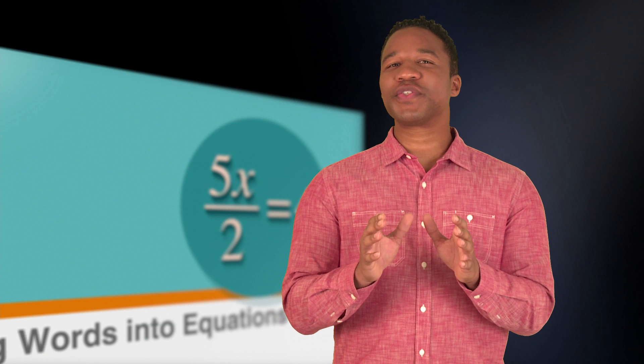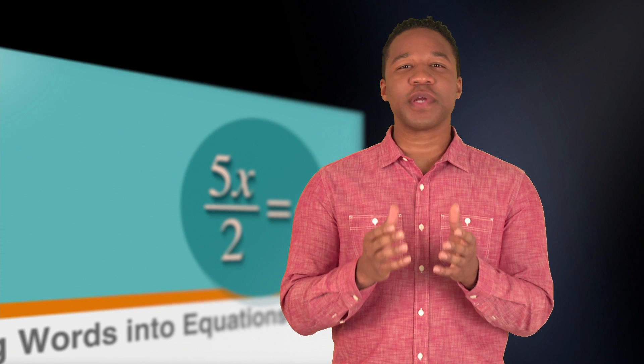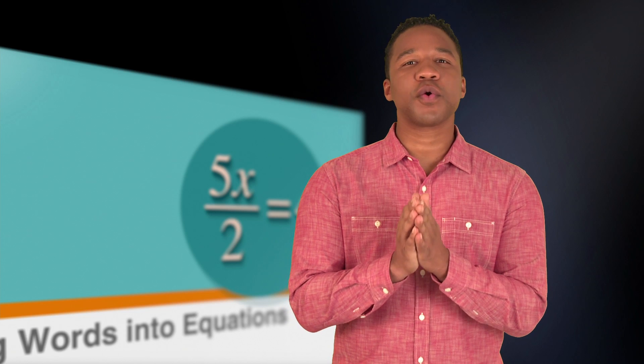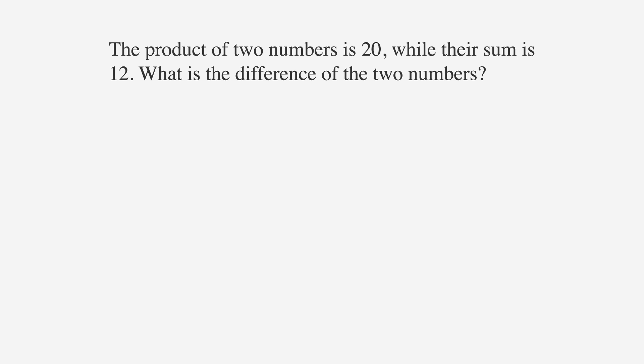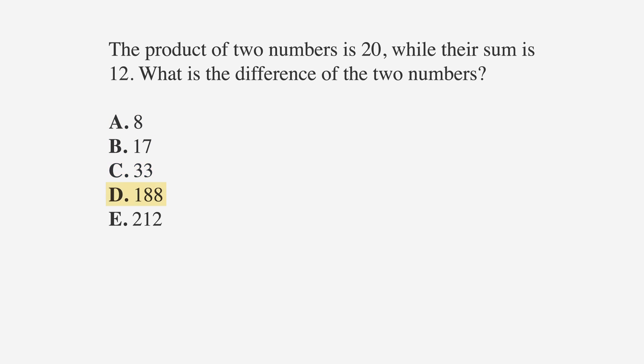So we turned words into equations for an addition problem. Now let's look at a word problem that involves multiplication. The product of two numbers is 20, while their sum is 12. What is the difference of the two numbers? The answer choices are: a is 8, b is 17, c is 33, d is 188, and e is 212.